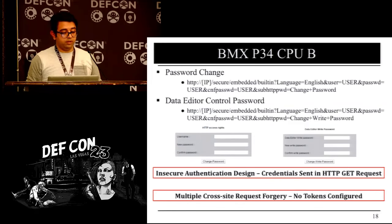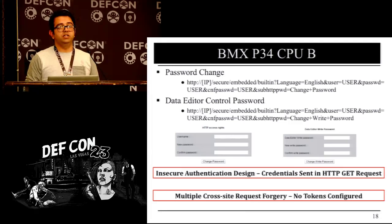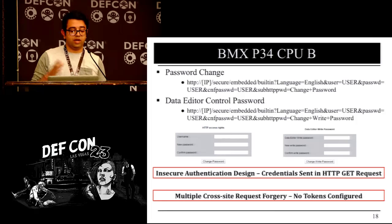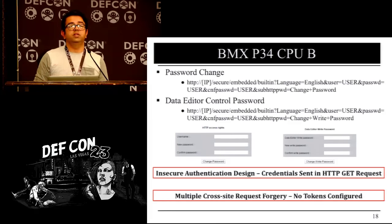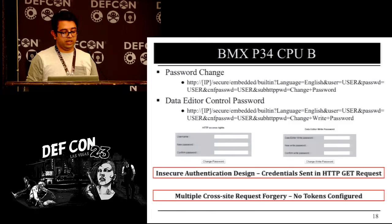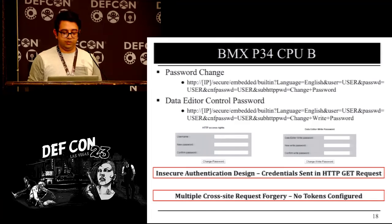Moving forward — cross-site request forgery vulnerabilities. No tokens are specified. There's a complete URL which is simply an HTTP GET, you have these parameters, you force the user to click the link, and you can change the password or control the editor password. It's all open in that scenario.